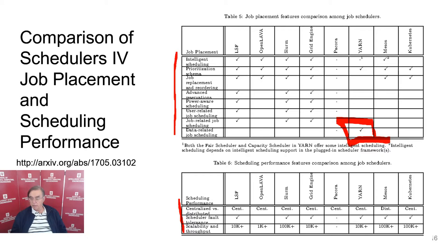Looking at centralized versus distributed, Mesos is the one that has distributed features. Fault tolerance is again sometimes present, but typically for major systems it is present. And then we have various performance measures — scalability and throughput.